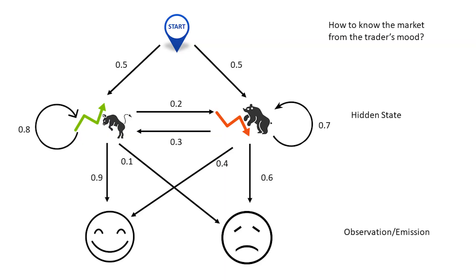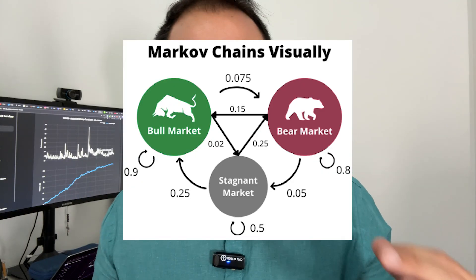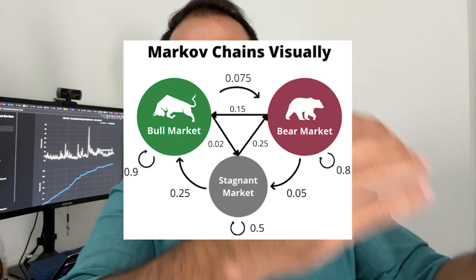A Hidden Markov Model assumes that there are hidden states — like bull, bear, or high volatility markets, for example. Each state has a probability distribution that generates the observations we see. For example, in a bull market you might see more frequent positive returns, bigger than the negative ones, while in a bear market it's the opposite, together with higher volatility. The states evolve over time following a Markov chain, which is just a fancy way of saying that the next state depends on the current state, not the entire past history.